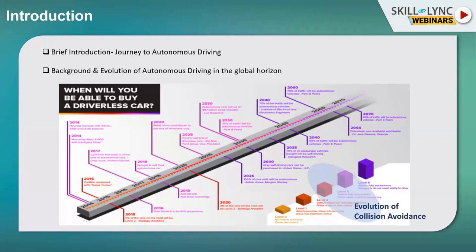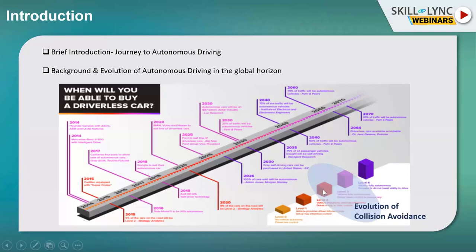Collision avoidance, as you can see in this slide, lies within the L2 and L3 autonomy levels, and currently most OEMs stand at such levels as of 2020. This is one of the significant features growing rapidly in the modern world of unmanned vehicles.